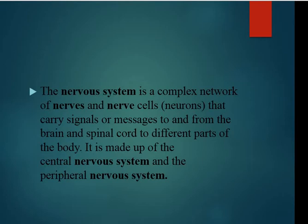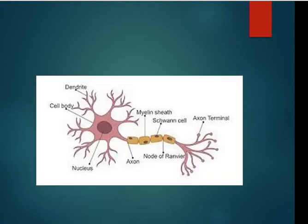Remember, before starting this topic, the basic functional and structural unit of the nervous system is the neuron. We will go through the structure of the neuron so that we have no difficulty. The neuron is our nerve cell. We divide its structure into two main parts.